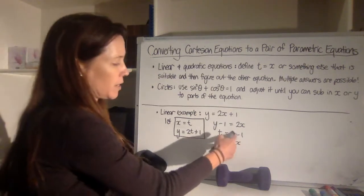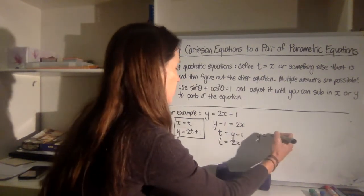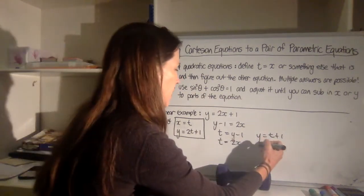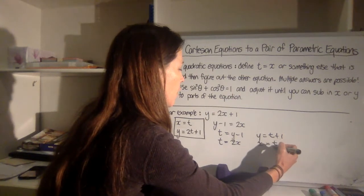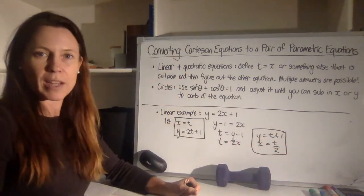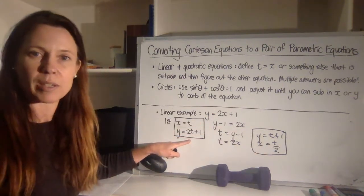Now getting these so that x and y are the actual subjects there, I can say that y is equal to t plus 1, just adding 1 to each side, and I can say that x is equal to t over 2. So this is another pair of parametric equations that describes this straight line just as adequately as this one does.